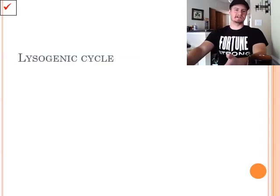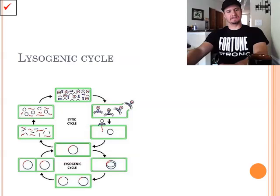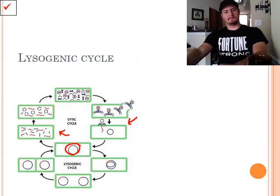Now, the other type is the lysogenic cycle. The lysogenic cycle starts off as the lytic cycle. Like we said before, right here, our virus lands on the host cell. It injects its DNA, but instead of taking over the cell like it did here, what it does is it merges. So it becomes one with the host DNA. So every time the host cell makes a copy of itself, it's making another copy of the virus.